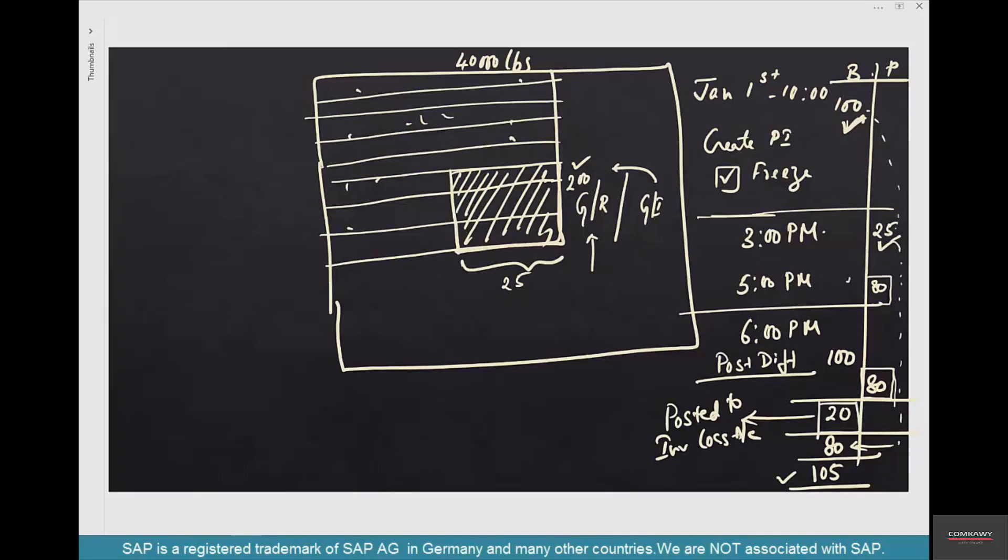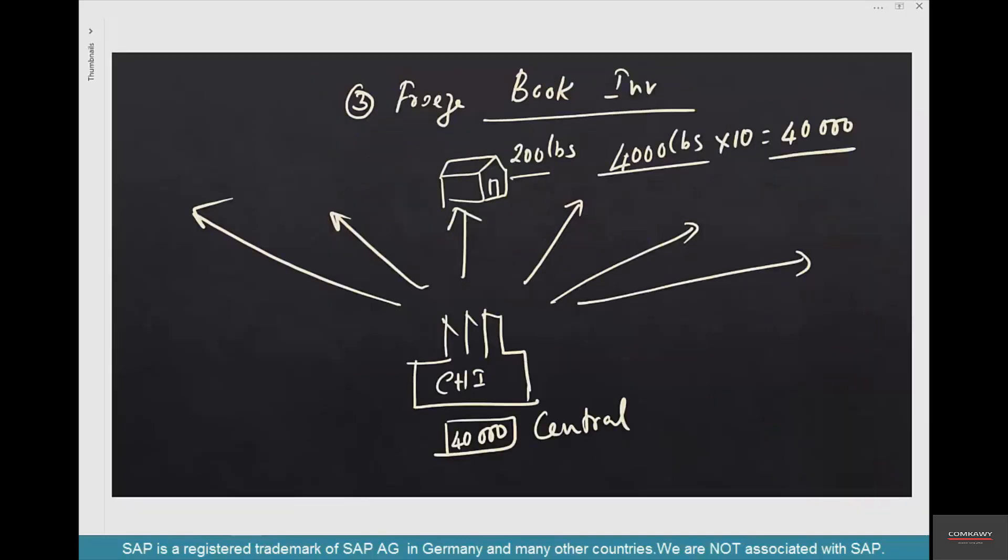The actual stock that has to be written off is just 20 because that's the only one that's missing. But if you keep doing GR or GI, additional stock will be added to the book inventory and it will cause a whole lot of confusion. In order to prevent that, SAP provides a method called freezing of the book inventory, whereby the books are frozen.